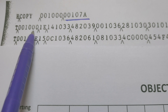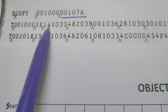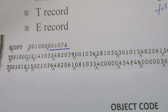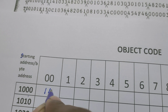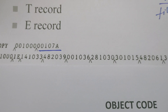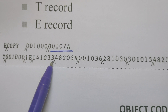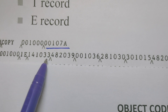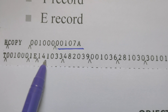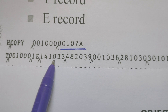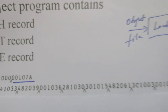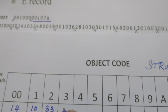When the loader reads the first text record, it says the starting address of the text record is 1000 and the length of this text record is 1E. The first object code is 141033. At address 1000, '14' is written; at 1001, '10' is written; at 1002, '33' is written. Each object code is three bytes, since each hex digit is half a byte.